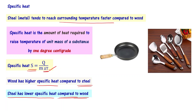Now you understand why wooden handles are used for cooking utensils. We are heating the food, supplying some amount of heat. When you supply some amount of heat, metal heats up fast — its temperature rises faster compared to wood. That is why the reason is that steel has lower specific heat compared to wood, and so steel vessels are given wooden handles.